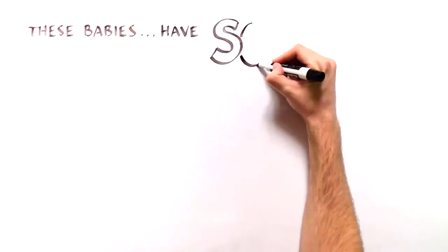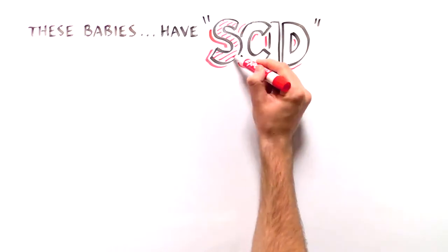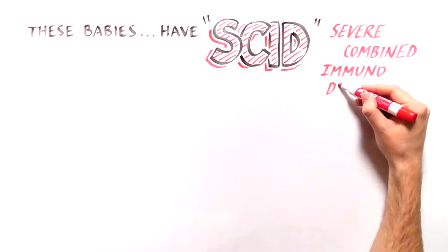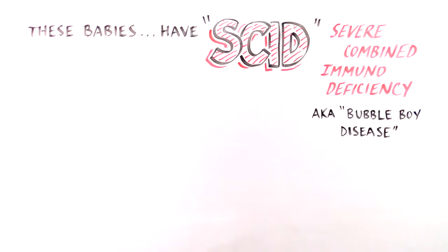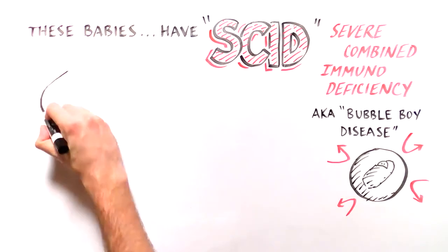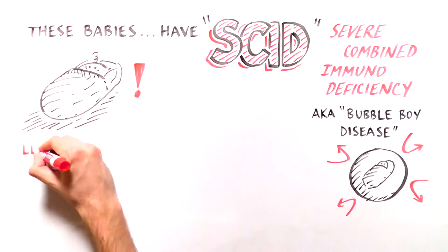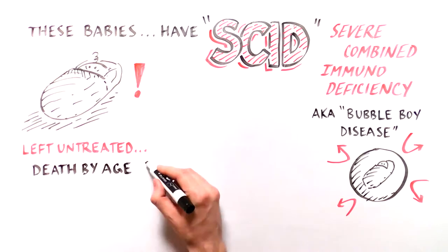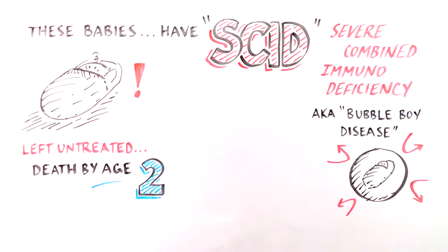These babies have what is called severe combined immunodeficiency, or SCID. SCID is commonly known as bubble boy disease, because at one time the only way to manage the disease was to isolate the sick child in a sterile environment. Left untreated, SCID babies typically die within their first two years of life.